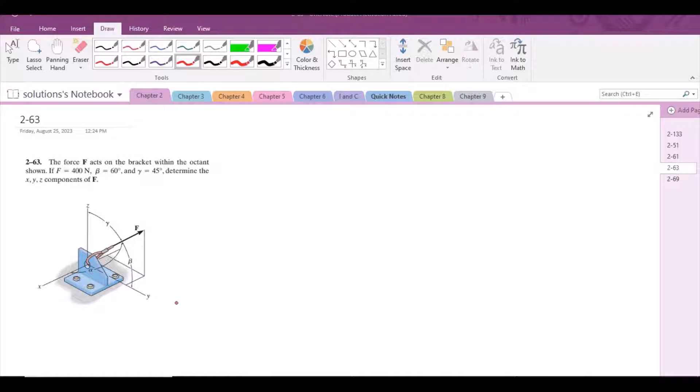Basically, these beta and gamma are the coordinate direction angles. There are three coordinate direction angles. The alpha is unknown, we have to find it out. Beta is 60 degrees and gamma is 45 degrees.